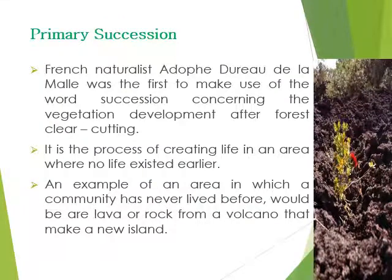Successions are of two types: primary succession and secondary succession. It is a phenomenon or process by which an ecological community undergoes more or less orderly and predictable changes following a disturbance or the initial colonization of a new habitat. Succession may be initiated either by formation of new unoccupied habitat such as from a lava flow or landslide, or by disturbance of a community such as fire or logging. The succession that begins in a new habitat uninfluenced by pre-existing communities is called primary succession, whereas succession that follows disturbance of a pre-existing community is called secondary succession.